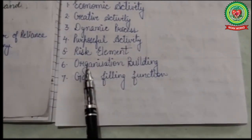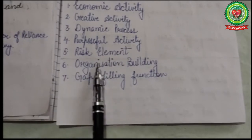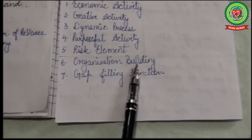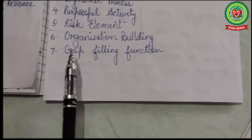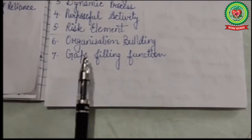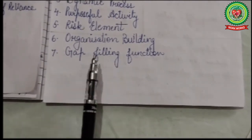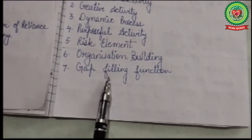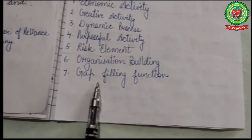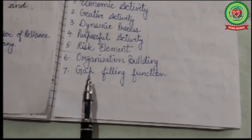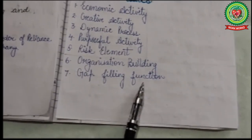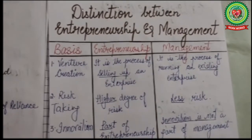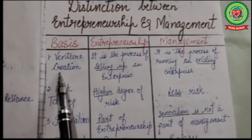Sixth is organization building — the entrepreneur assembles and coordinates other factors of production like land, labor, and capital, so it is called organization building. Seventh is gap filling function — it is the job of an entrepreneur to fill the gaps of needs, goods, and services that are needed in the market and by customers. That is why entrepreneurship is a gap filling function.